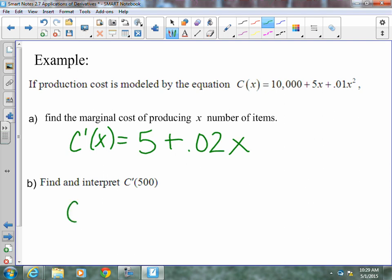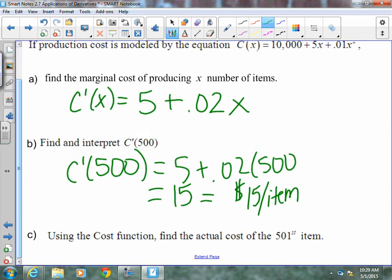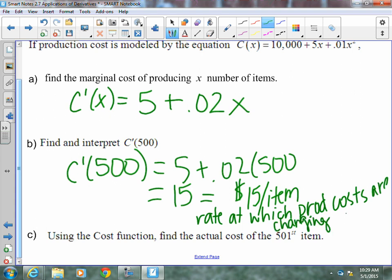This says find and interpret C'(500). So, we've got to plug in the 500 and we end up with 15. This means it is $15 per item and this is considered the rate at which production costs are changing after the 500 items are produced.